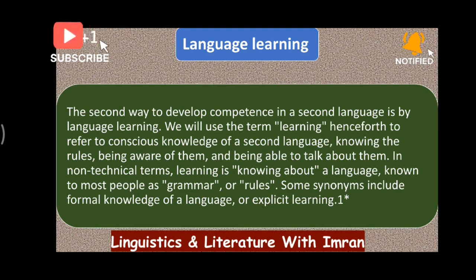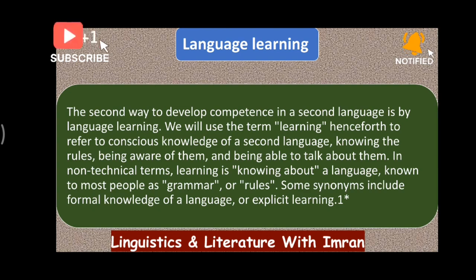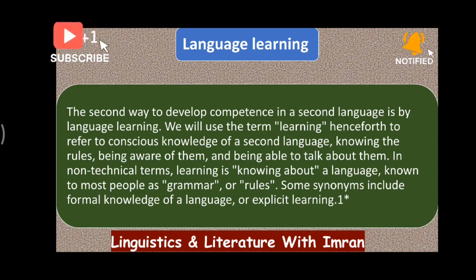Some synonyms for language learning include formal knowledge of a language or explicit learning. So on one hand we have implicit learning — that is language acquisition — and explicit learning — that is language learning. Language acquisition is a subconscious process; language learning is a conscious process. In language acquisition we do not know the rules; in language learning we know the rules, like grammar.